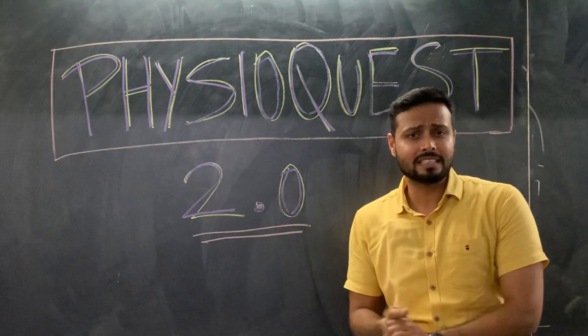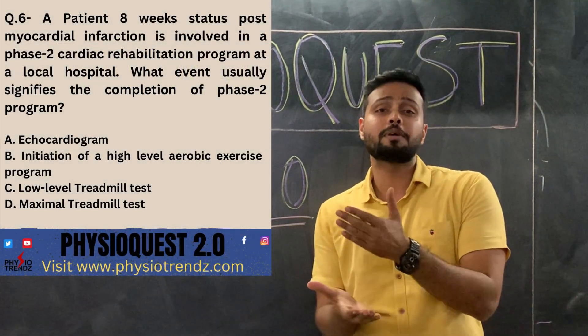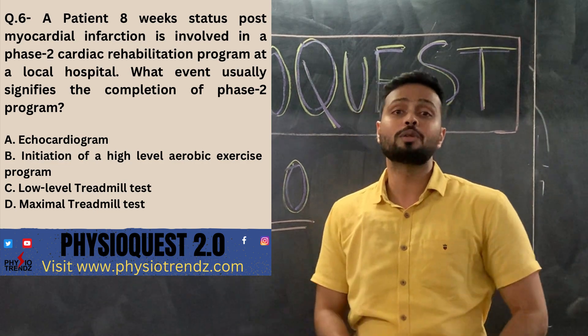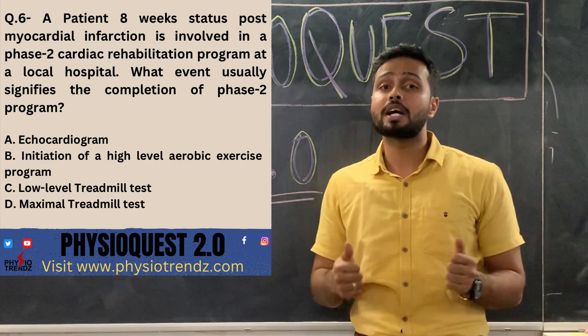The question asks which event signifies that a patient can move forward to cardiac rehabilitation phase 2 after the 8th week of cardiac rehabilitation.